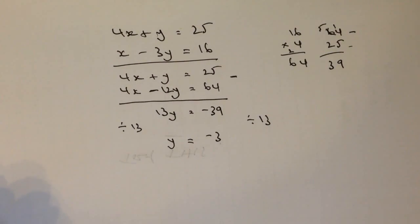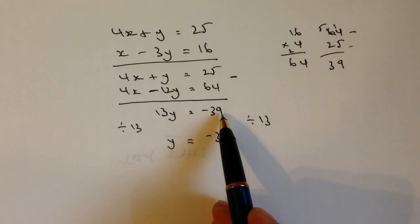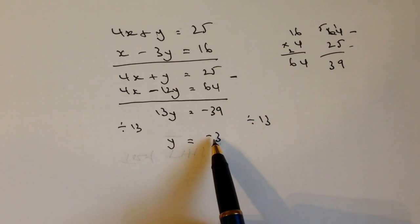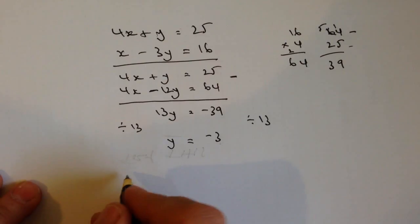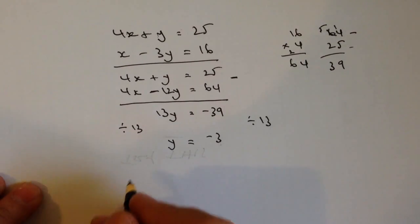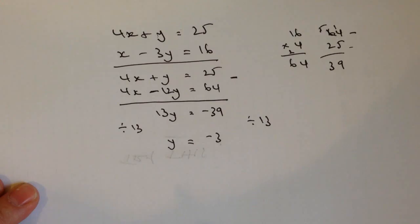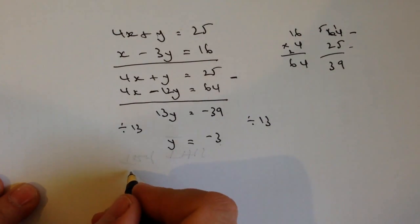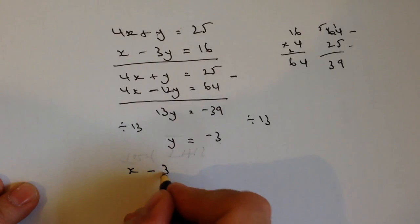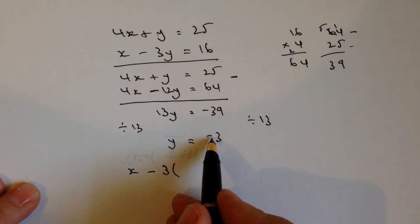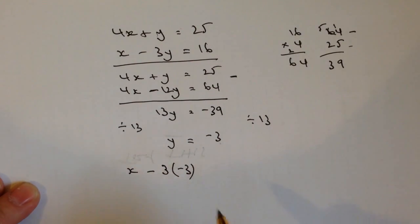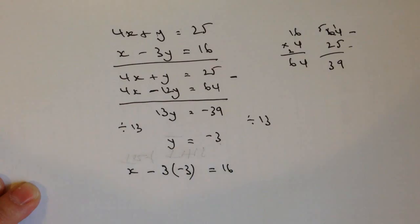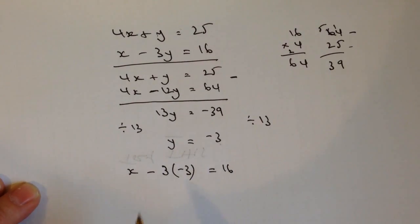So once I've got that value of minus 3 because minus 39 divided by 13 is minus 3, it'll then allow me to put that value of y back into the equation. So let's just do that. We're going to substitute this back in. It doesn't matter which one we do. I'm just going to do the second one because it just looks a little bit easier to manage, although there is a negative in there. I've got x minus 3 and I'm going to put this bracket and then minus 3 in place of the y and that's going to equal 16.